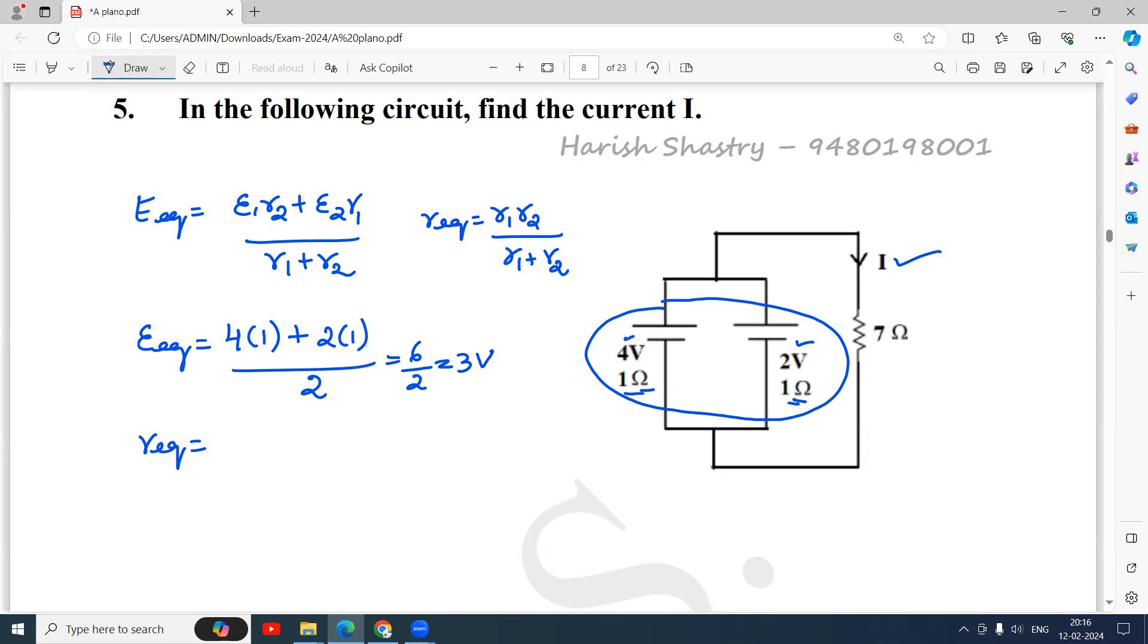What is R equivalent? R equivalent is R1·R2 by R1 plus R2. That is 1 into 1 divided by 1 plus 1. 1 into 1 by 1 plus 1, that is equal to 1 by 2, that is 0.5 ohm.